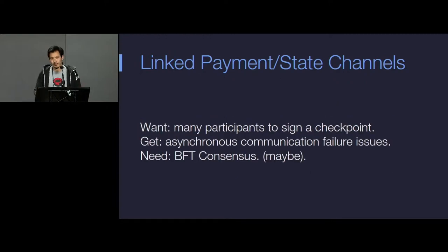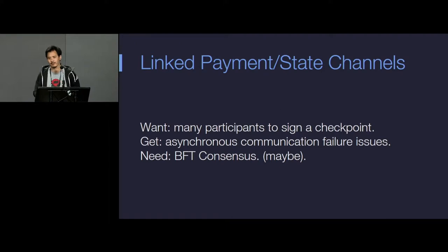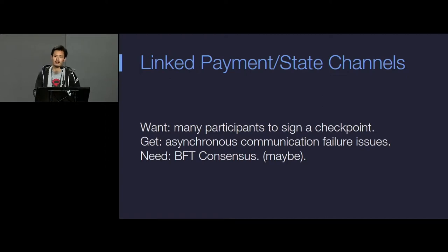Whenever you have multiple parties, you have an asynchronicity problem. State channels and payment channels are generally done with bilateral connections and you can link them together to make a network or chain, but at some point many applications require multiple parties. Whenever you have multiple parties, you're going to have a pretty bad asynchronicity problem. What you probably want is BFT consensus so that even though up to a third of the actors and signers are offline, you can still come to consensus.